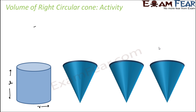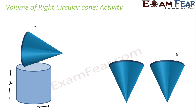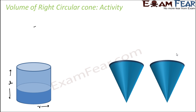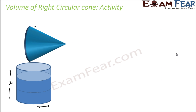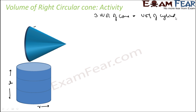You take three such cones, each with radius r and height h. Fill the first cone with water and empty it into the cylinder — the water level rises. Add the second cone, water level rises again. Add the third cone, and after three cones the cylinder is completely filled. So three times the volume of the cone equals the volume of the cylinder.